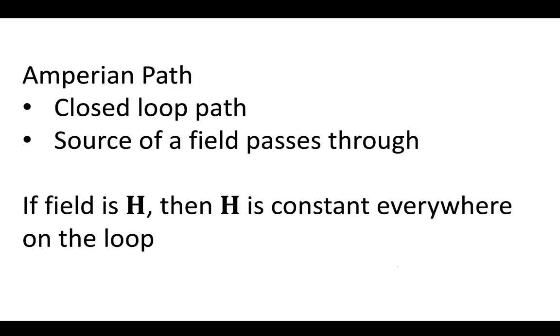Likewise, the Amperian path and Gauss's Law for Magnetism can be applied in magnetostatics. Now for the Amperian path, this is a closed loop path, so instead of a closed volume, it's a closed loop. The source of a field passes through that closed loop.